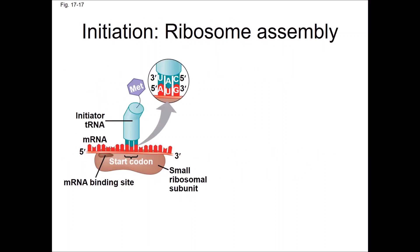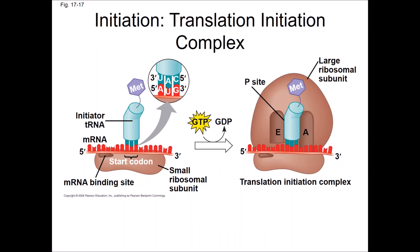The initiator tRNA is a methionine tRNA, and it has the anticodon sequence UAC from three prime to five prime. It binds to the AUG start site past the five prime UTR of the mRNA. It and the small subunit of the ribosome trigger initiation. The large subunit of the ribosome can then join the small subunit, and it initially places the methionine tRNA into the P site. This is the only tRNA that will come into the ribosome at the P site; the rest will come in at the A site.